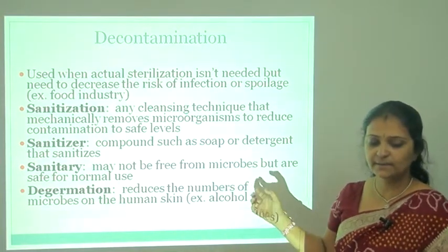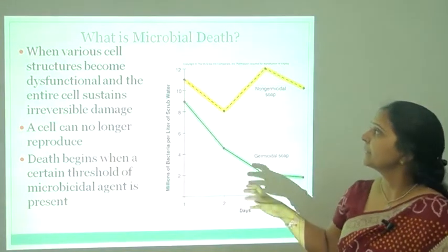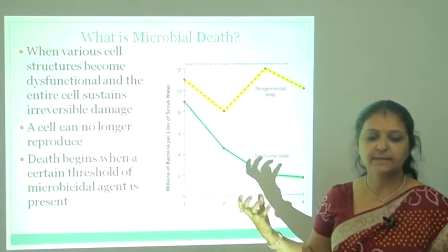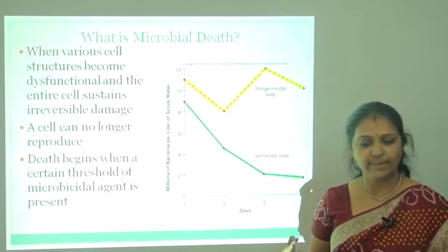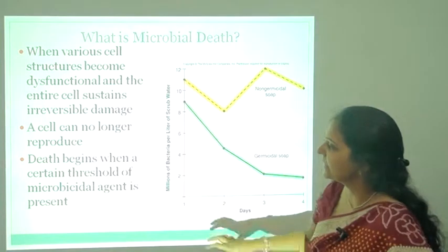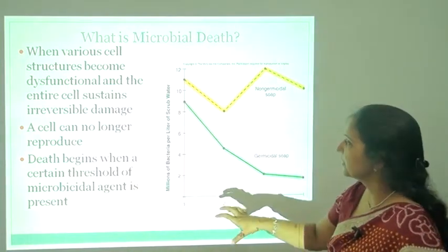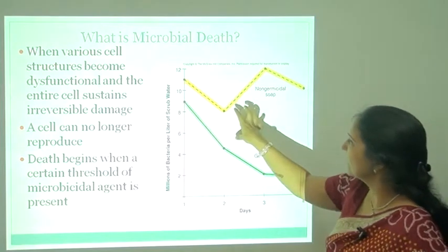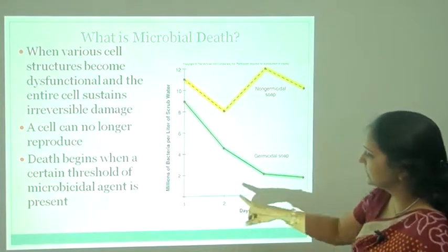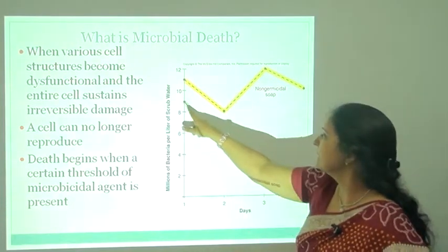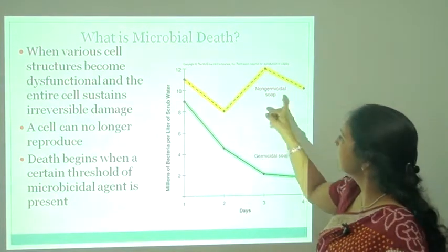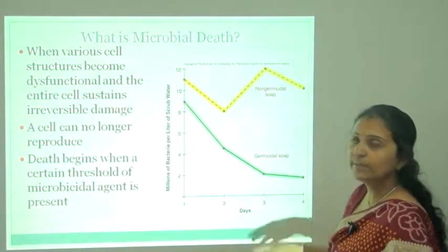Degermination reduces the number of microbes on human skin. What is microbial death? The cell structure becomes dysfunctional and the entire cell sustains irreversible damage — a cell that no longer reproduces — and this begins when a certain threshold of microbicidal agent is present. Germicidal soap can reduce the growth of microorganisms after 3 to 4 days, while non-germicidal soap cannot reduce microbial growth.